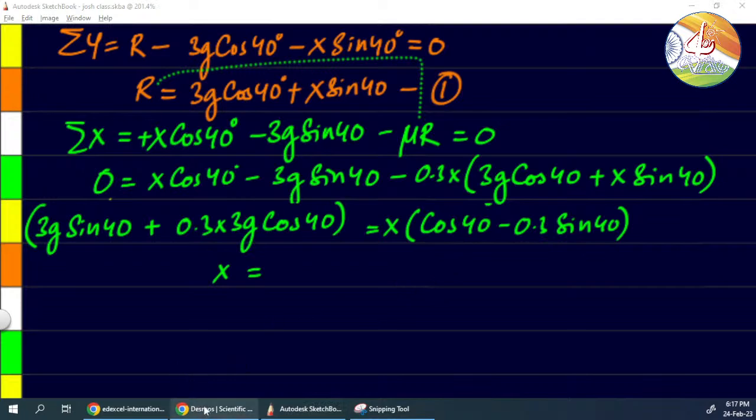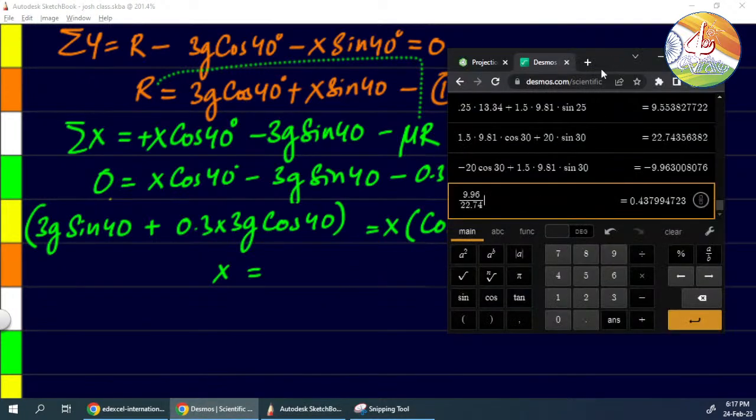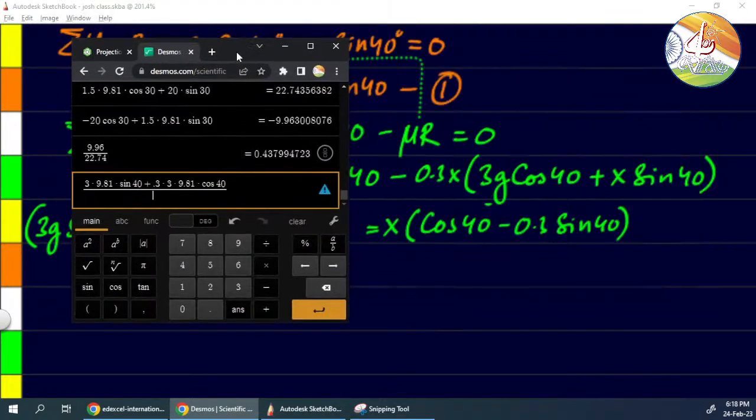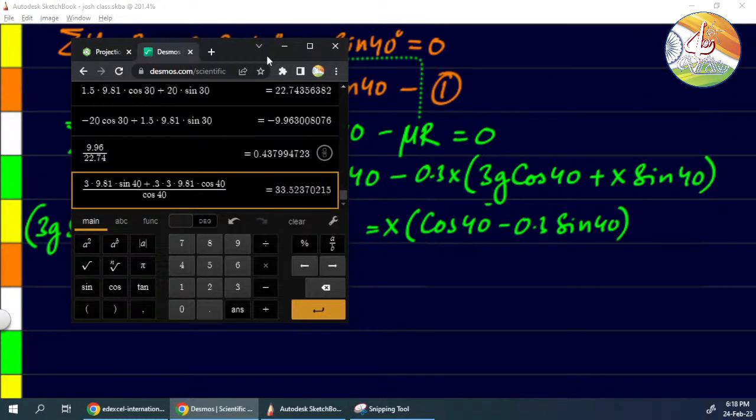Let's feed it in the formula directly. First numerator: 3 into 9.81 into sin 40 plus 0.3 into 3 into 9.81 into cos 40. Denominator: cos 40 minus 0.3 into sin 40.